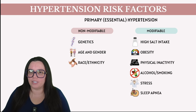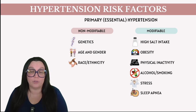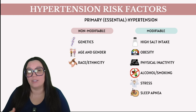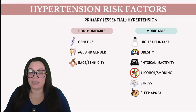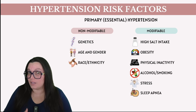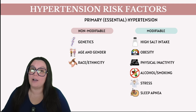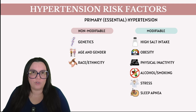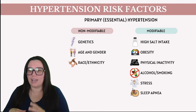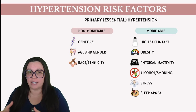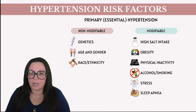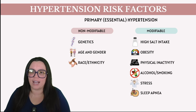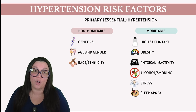Age is another non-modifiable factor — as we get older, blood vessels naturally lose some of their elasticity, which leads to increased resistance and high blood pressures. Next we have gender: generally men are more likely to develop hypertension at a younger age than women, however after menopause the risk for women increases, most likely due to hormonal changes. Finally, race and ethnicity — certain ethnic groups, particularly African Americans, have a higher incidence of hypertension, likely due to genetic factors, environmental influences, and vascular sensitivity particularly when it comes to salt.